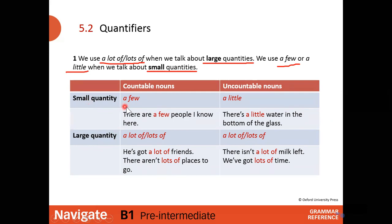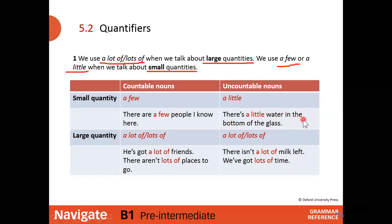We use 'a few' before countable nouns and 'a little' before uncountable nouns. For example: 'There are a few people I know here' — it means several people, not a lot, so the quantity is small. 'There is a little water in the bottom of the glass' — there is some water, but not a lot.